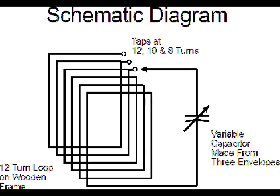Before I get into the step-by-step instructions, I'd like to take a brief look at the schematic diagram. Here you can see we have a 12-turn loop wound on a wooden frame with taps and a variable capacitor, which is made from a couple of envelopes. And this capacitor, in conjunction with the taps, will put this circuit into resonance in the AM broadcast band.